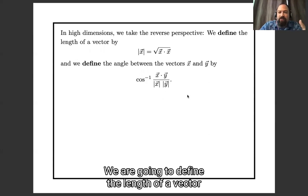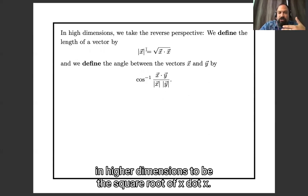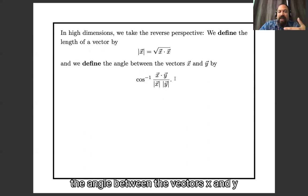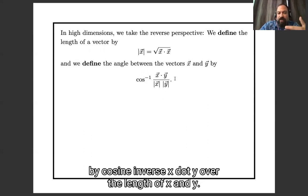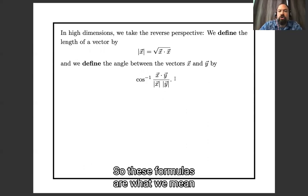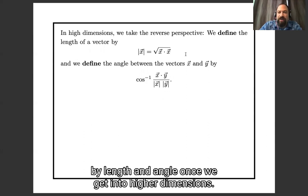So here's what we're going to do: we're going to reverse the direction of logic. We are going to define the length of a vector in high dimensions to be the square root of x dot x. And we are going to define the angle between the vectors x and y by cosine inverse x dot y over the length of x, length of y. So these formulas are what we mean by length and angle once we get into higher dimensions.